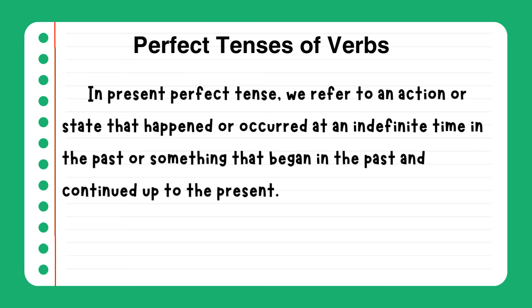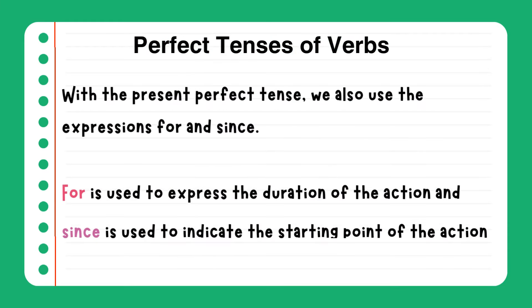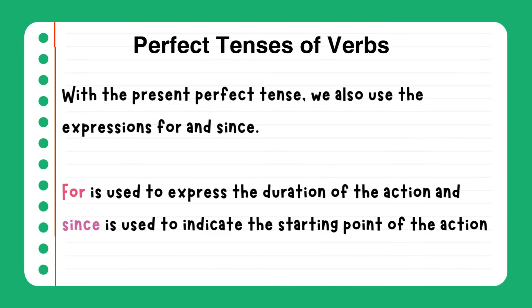The present perfect tense refers to something that began in the past and continued up to the present. With the present perfect tense, we also use the expressions for and since. For is used to express the duration of the action, and since is used to indicate the starting point of the action.